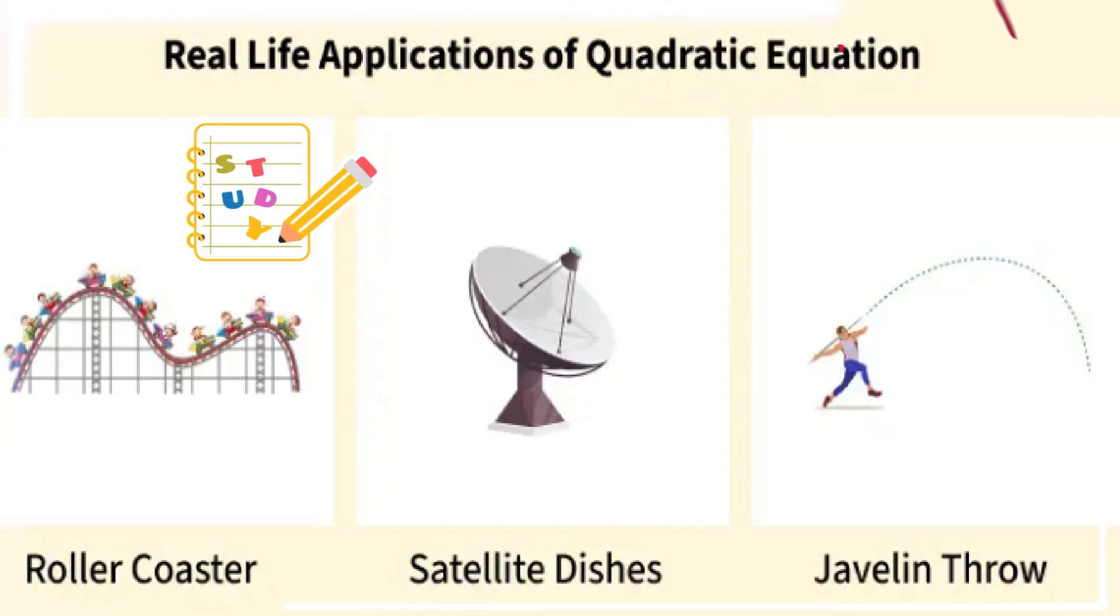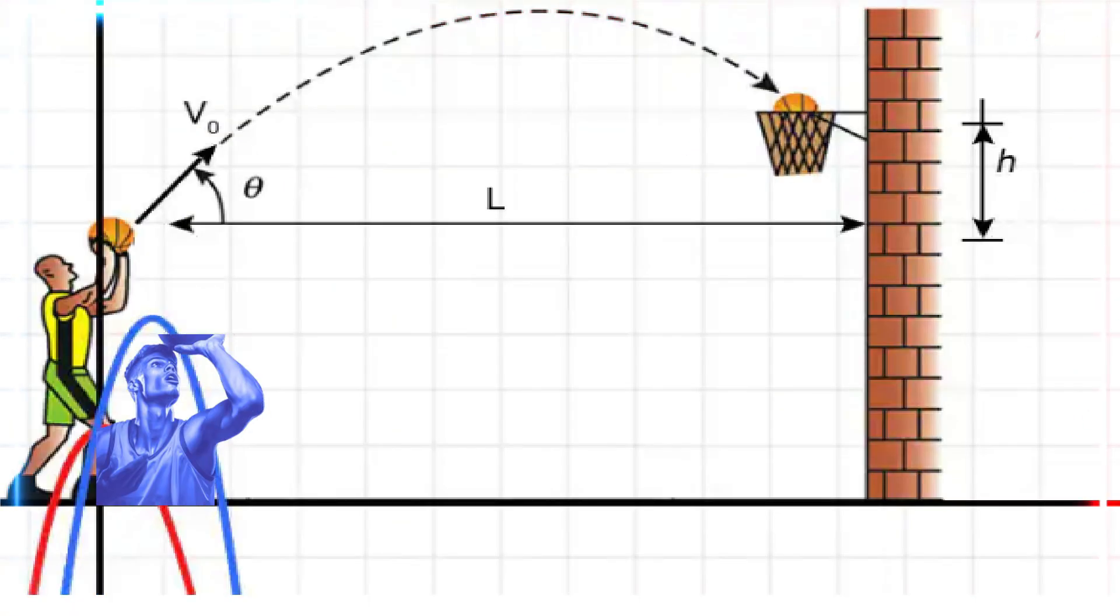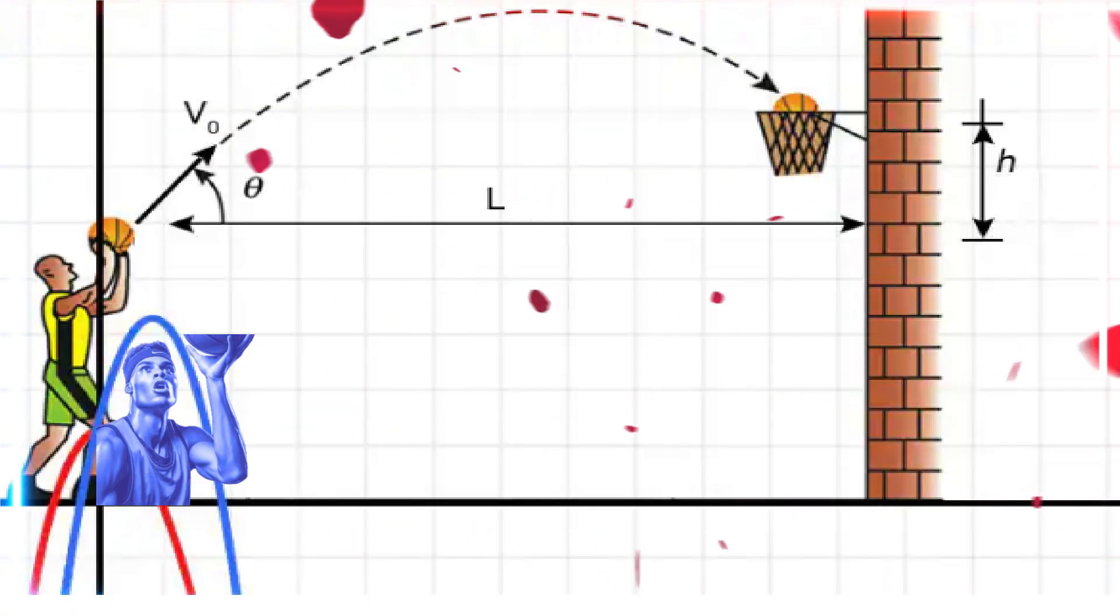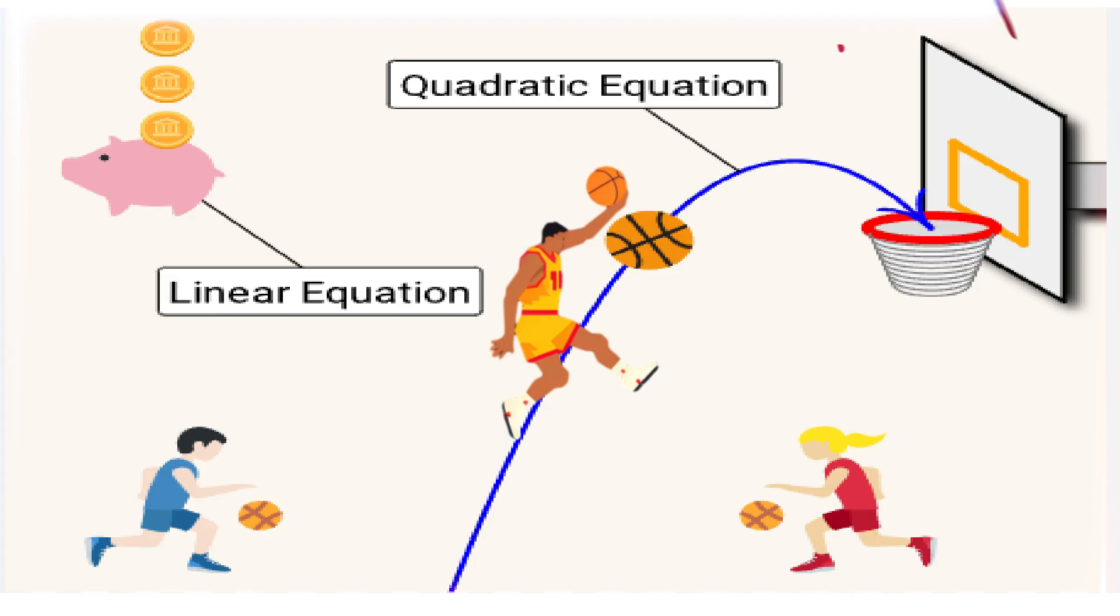The quadratic equation is most often used in physics to calculate real world motion. If you've ever watched a basketball arc toward the hoop, you've seen the quadratic equation in action. Ready to learn more?